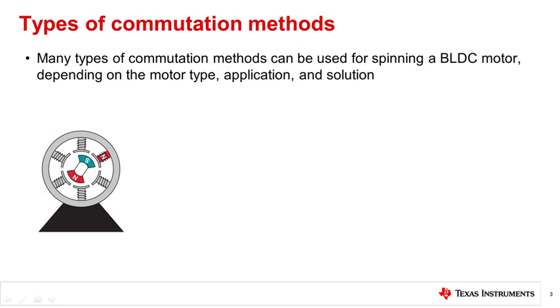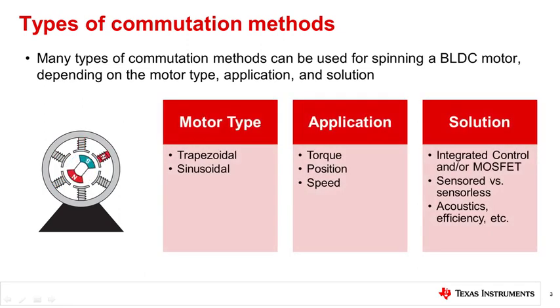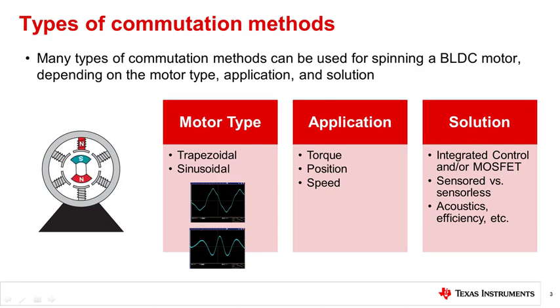There are many different ways to spin a three-phase brushless DC motor, ranging in efficiency and complexity. Before discussing them, it is important to know what factors are to be considered before choosing a commutation method. The first main factor of consideration should be the motor construction. Brushless DC motors can be wound trapezoidally or sinusoidally.